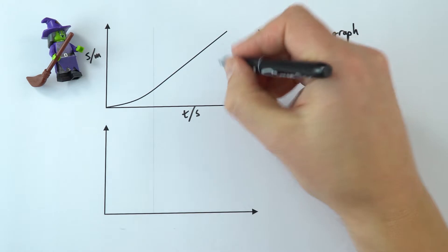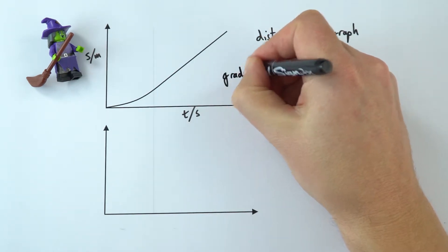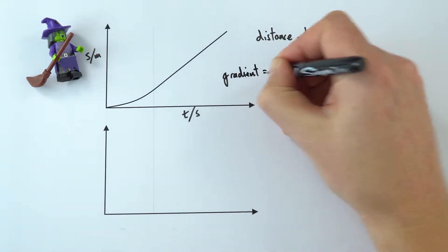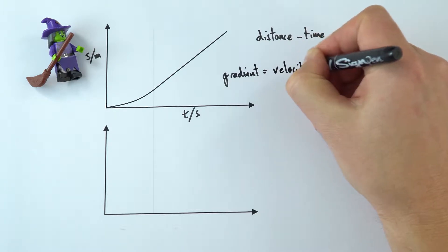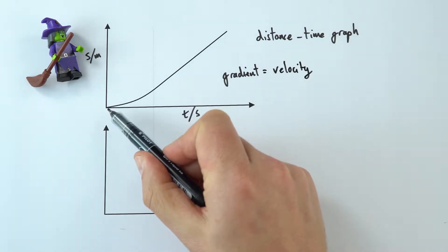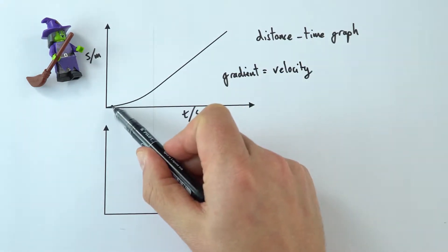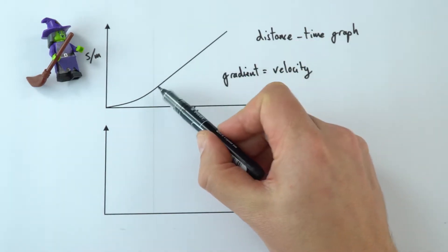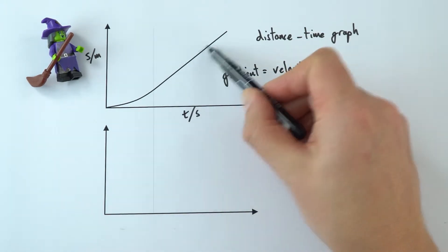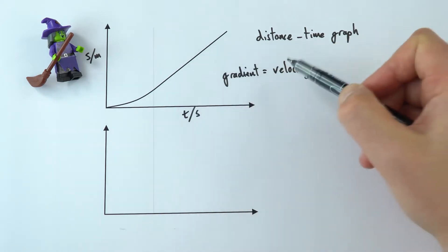And what we can take away from this is that the gradient represents the speed or the velocity of that object. So what we can see at the start is we have a sloping line, which means that as time goes on their velocity is increasing. And then when there's a straight line, we've got a constant gradient, and that means there's a constant velocity.